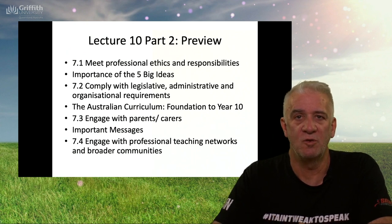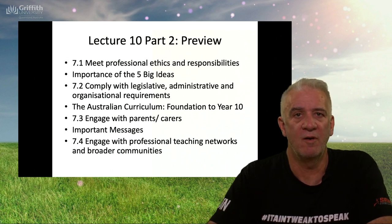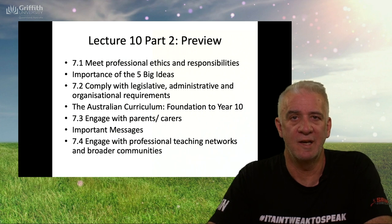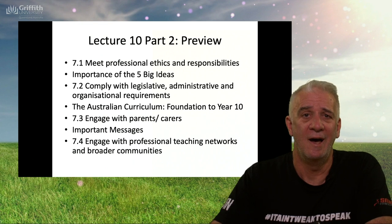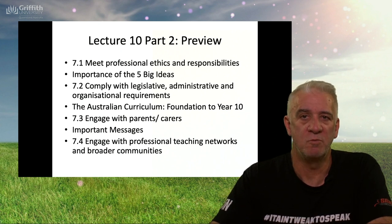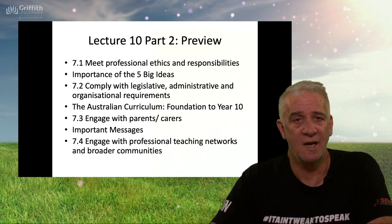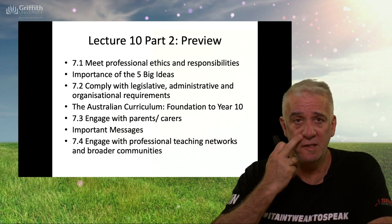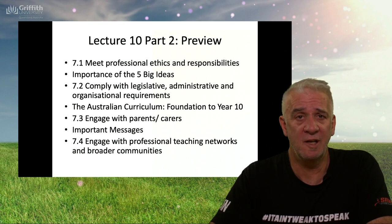Standard 7.1 covers meeting professional ethics of responsibility and the importance of the five big ideas in maths. 7.2 is about complying with legislative, administrative and organisational requirements — sounds interesting, doesn't it — and I'll link that to the curriculum. And 7.3 is about engaging with parents and carers. And 7.4 is about engaging with professional teaching networks and broader communities. Those are straight out of the professional standards, and in this course we're required to address them specifically as you become a primary school teacher of mathematics.